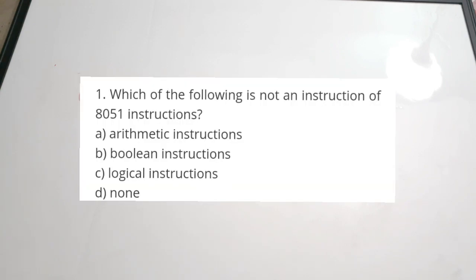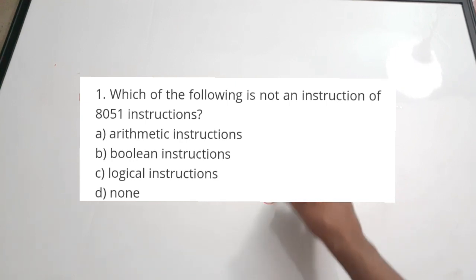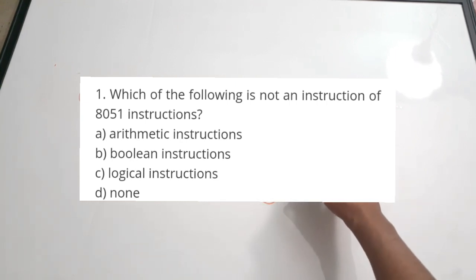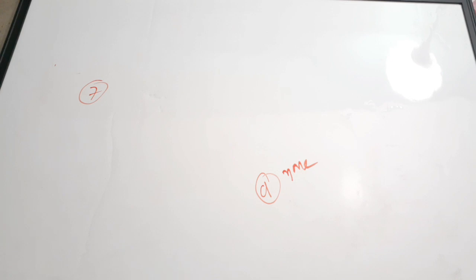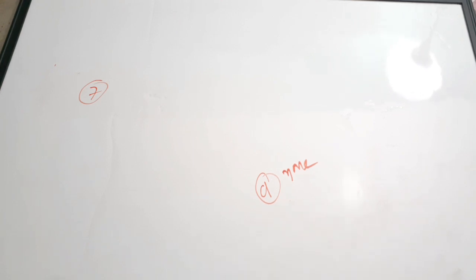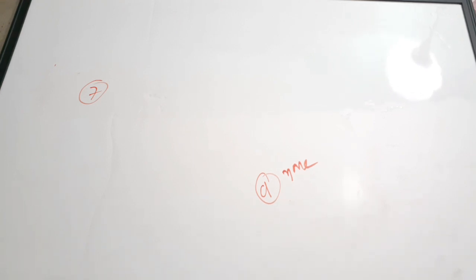Question number seven: which of the following is not an instruction of the 8051 instruction set? A) arithmetical instruction, B) boolean, C) logical, D) none. The correct answer is D, none, because all of the mentioned — arithmetical, boolean, and logical — are types of 8051 instructions.